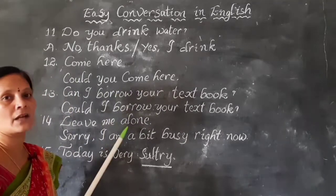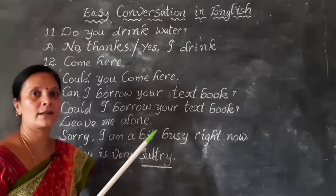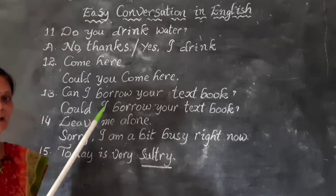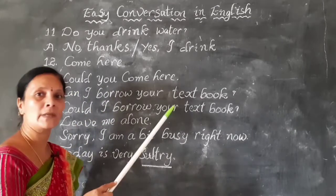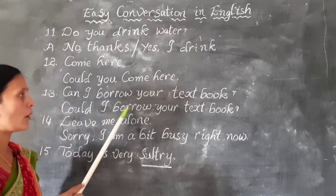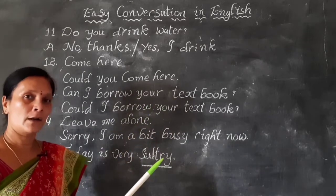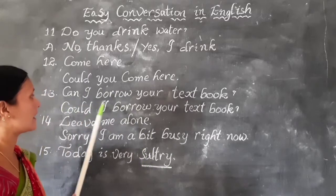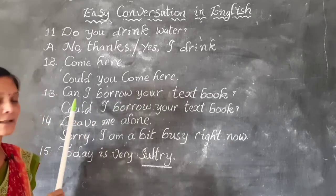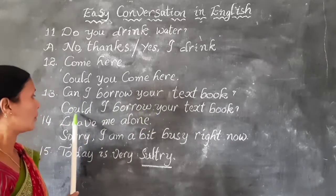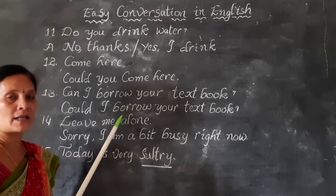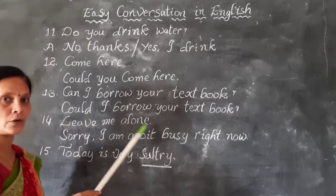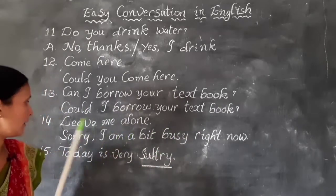We generally say 'Come here,' but that is not the correct polite way. Instead, say: Could you come here? Using 'could' shows politeness. Similarly, instead of saying 'Can I borrow your textbook?', say: Could I borrow your textbook? Or: Would I borrow your textbook? 'Could' and 'would' indicate politeness.